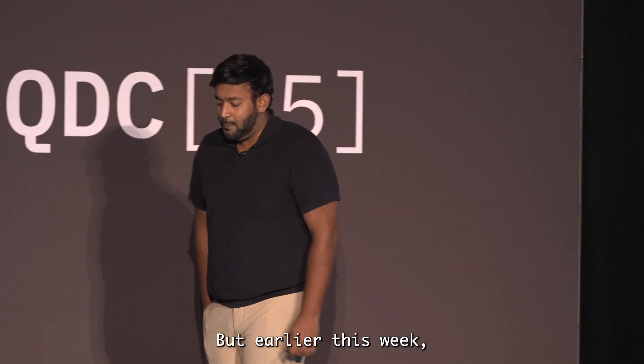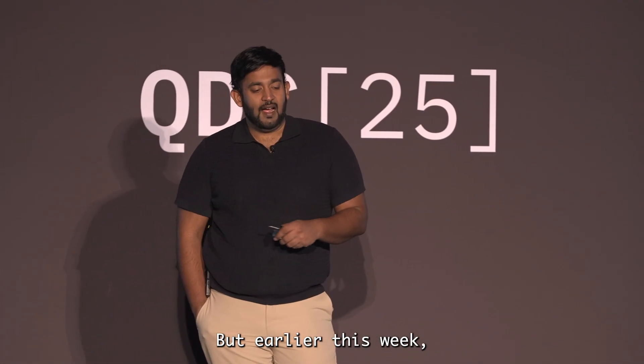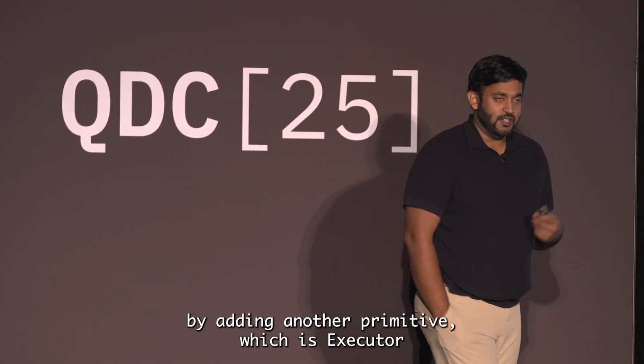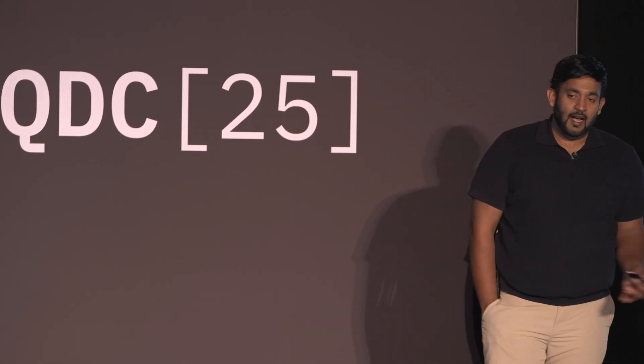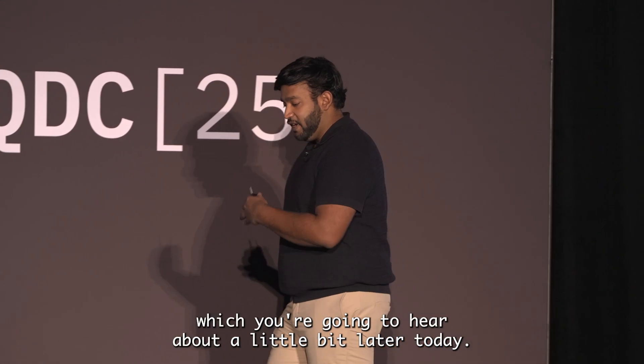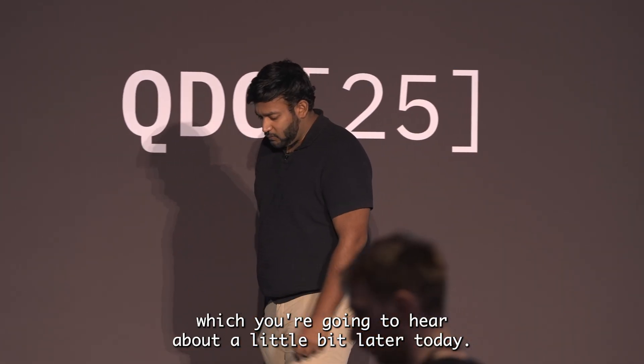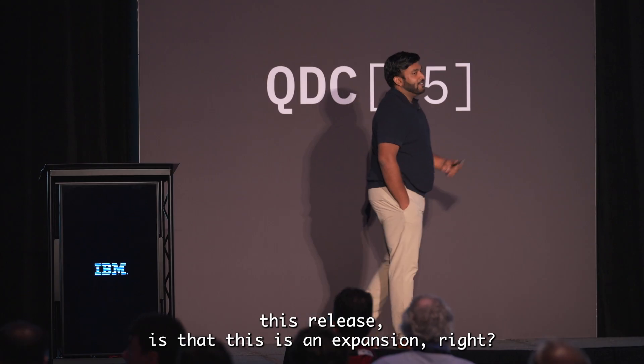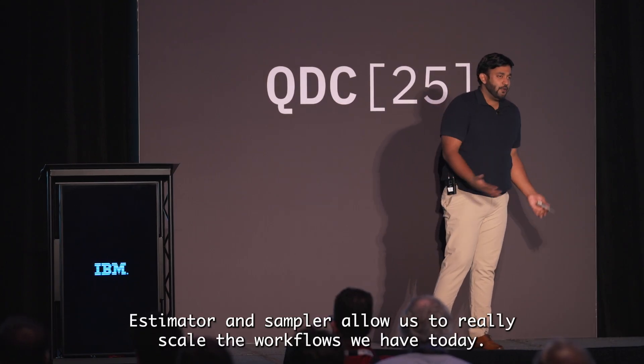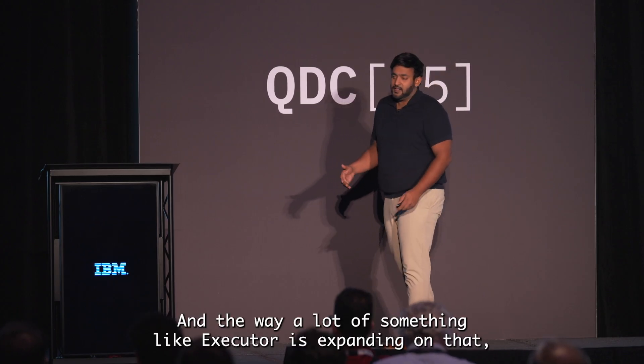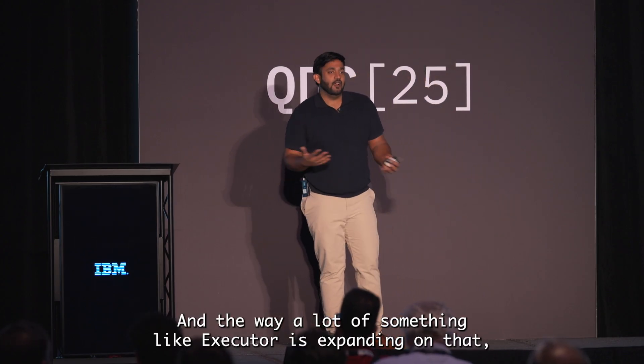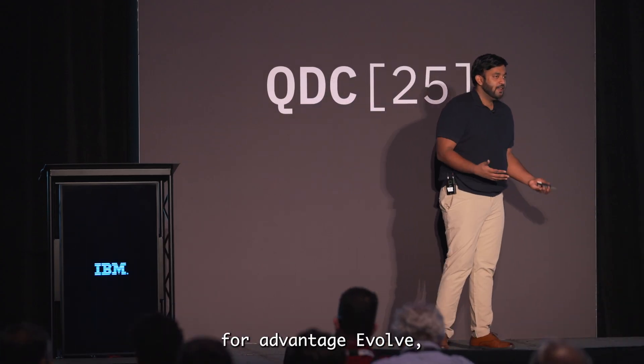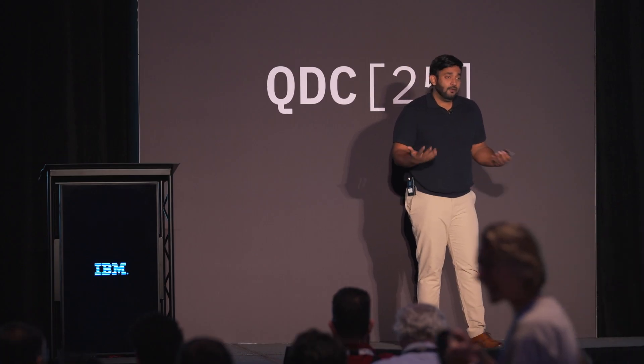Earlier this week, I announced that we're actually expanding on this interface by adding another primitive, which is executor, to support the sample-matic-enabled workflows you're going to hear about a little bit later today. This is an expansion—estimator and sampler allowed us to scale the workloads we have today, and executor is expanding on that because we're starting to see the capabilities we need to run to scale out the circuits for advantage.